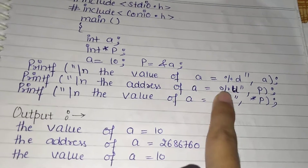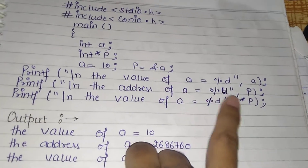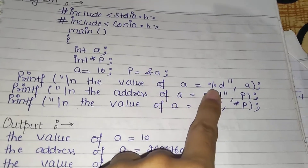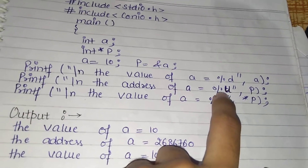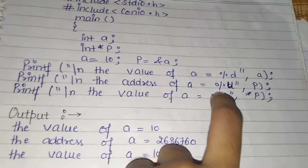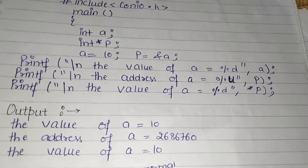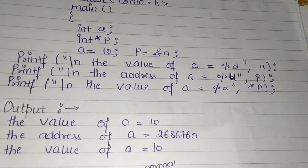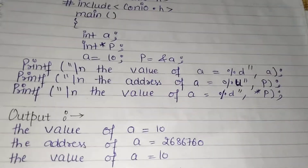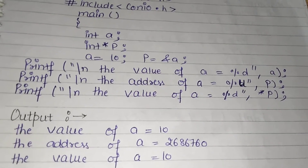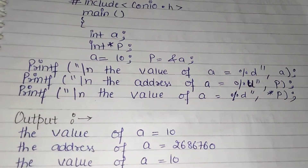In the first line we have to print the value of a, and in the second line we have to print the address of a. We have to use %d because it is an integer. When we have to indicate or store a pointer address, we have to use an unsigned data type — unsigned integer — which means we can hold only positive values.